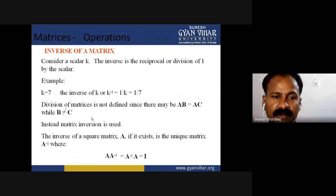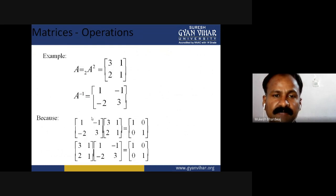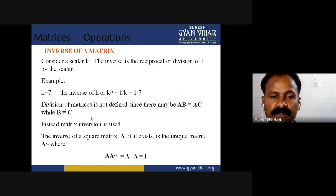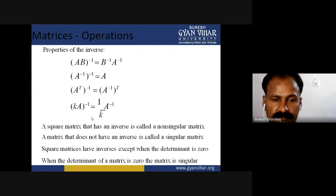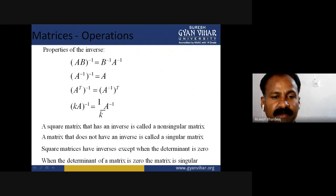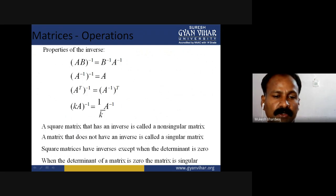The symmetric matrix is a special type of matrix in which if A matrix is transposed and it equals to A, then it is known as symmetric matrix. Now, the inverse of matrix — for finding out the inverse of matrix, we are required to go through the topic determinant, because the determinant is required for finding out the inverse. A square matrix that has an inverse is called non-singular matrix. A matrix that does not have an inverse is called singular matrix.